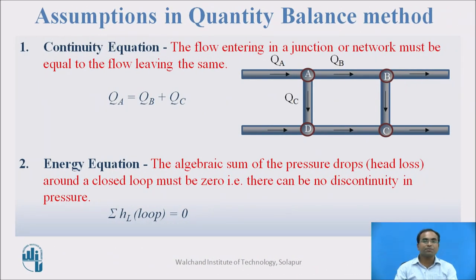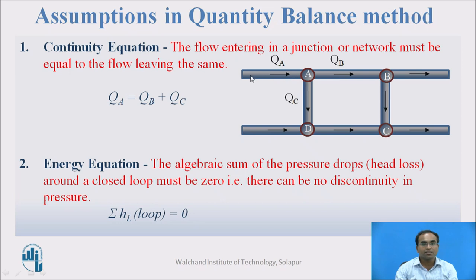There are two principles for studying the Hardy Cross method. The first is the continuity equation, which states that the flow entering a junction or network must be equal to the flow leaving it. For example, at junction A, Q_a is the flow coming into the loop, and Q_b and Q_c are the flows going out. So at this junction: Q_a = Q_b + Q_c.